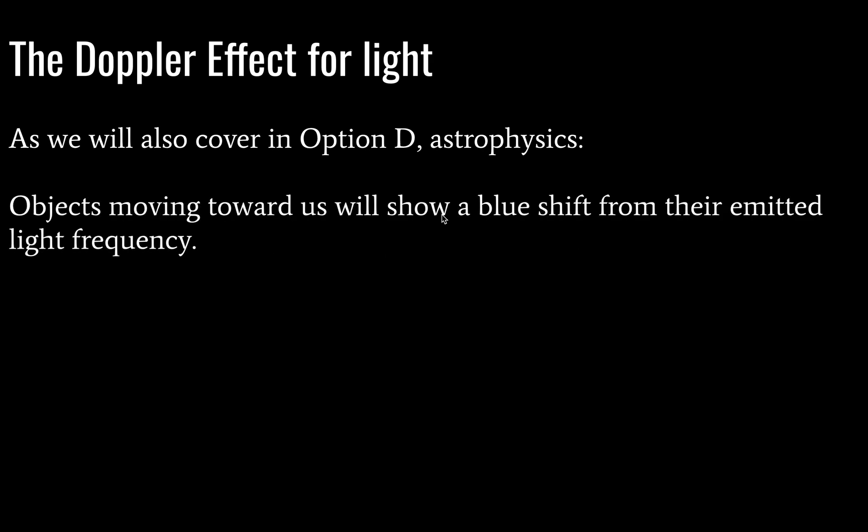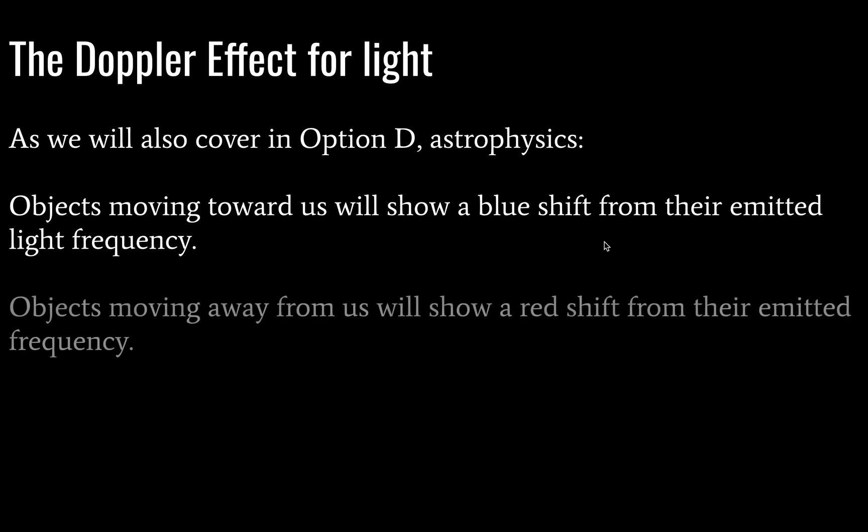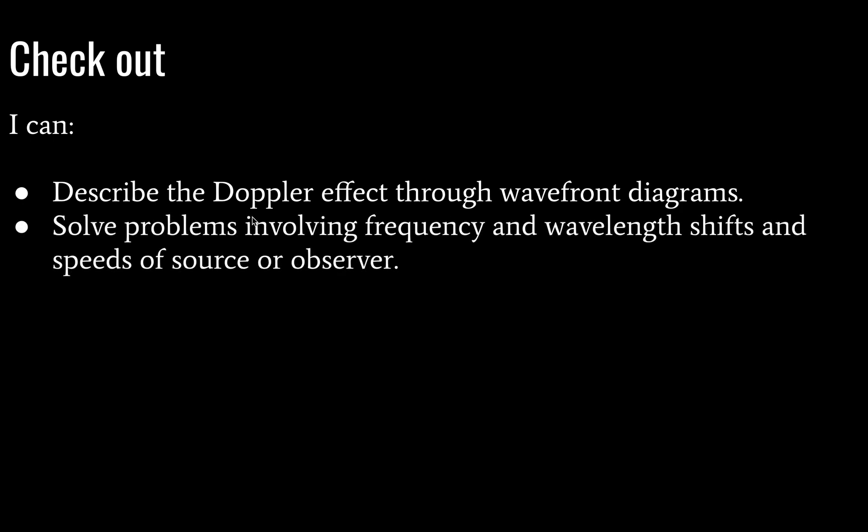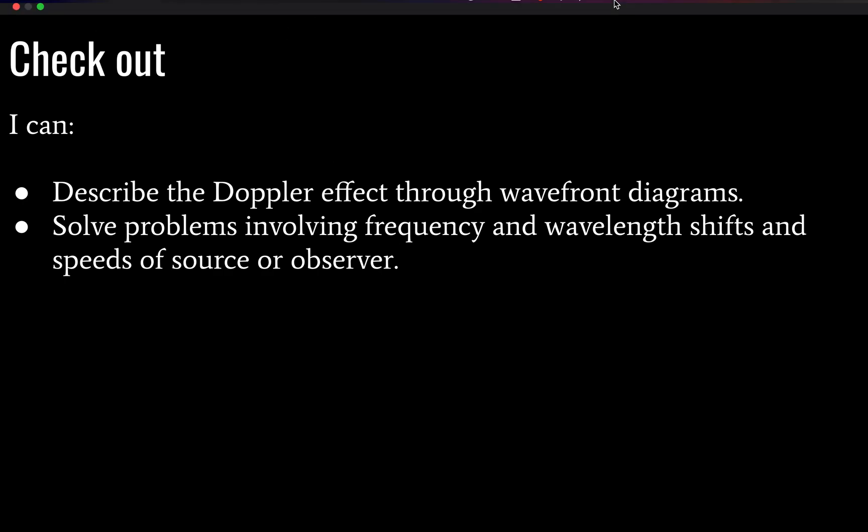So objects moving toward us have a blue shift. Yes. Objects moving away show a red shift. I've already said that. Okay, your check out. I can describe the Doppler effect through wavefront diagrams. We've covered that in some detail. You should also now be able to solve problems involving frequency and wavelength shifts and speeds of source or observer. And I recommend you try some practice problems at this time. This has been Mr. Vandalow's low budget, poorly monetized science channel. Do not click like, do not click subscribe, and have a great day.